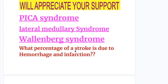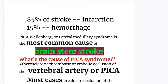What percentage of stroke is due to hemorrhage and infarction? 85 percent of strokes are due to infarction — atherosclerotic or embolic — and 15 percent are hemorrhagic. The PICA syndrome, Wallenberg syndrome, or lateral medullary syndrome is the most common cause of brainstem stroke.